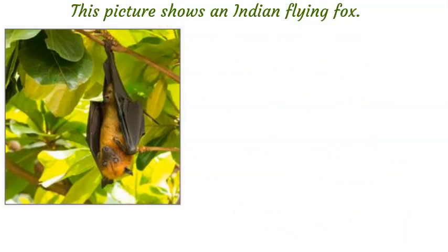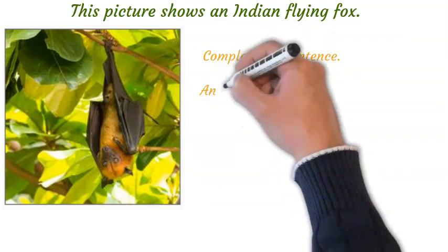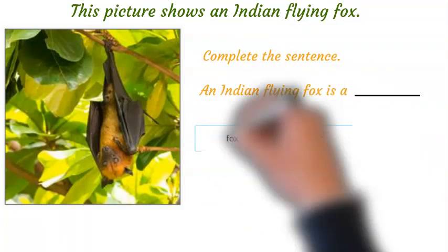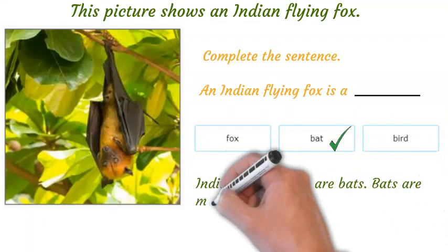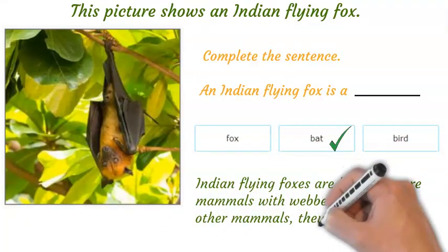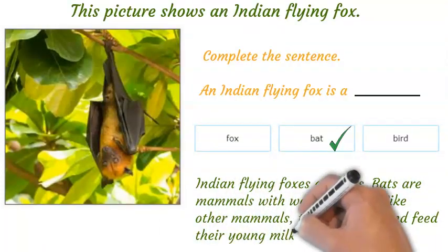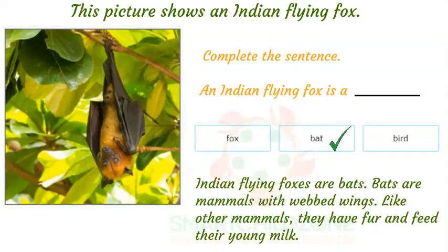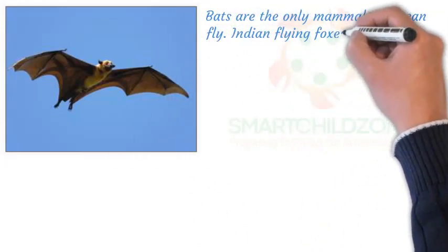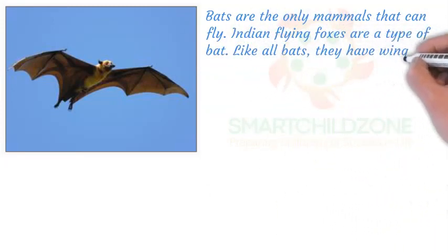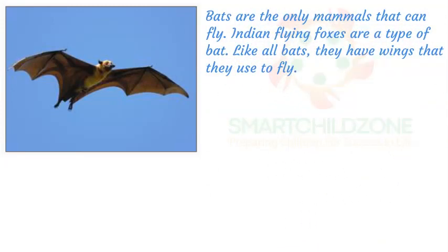This picture shows an Indian flying fox. Complete the sentence: an Indian flying fox is a bat. Bats are mammals with webbed wings. Like other mammals, they have fur and feed their young milk. Bats are the only mammals that can fly. Indian flying foxes are a type of bat, and like all bats, they have wings that they use to fly.